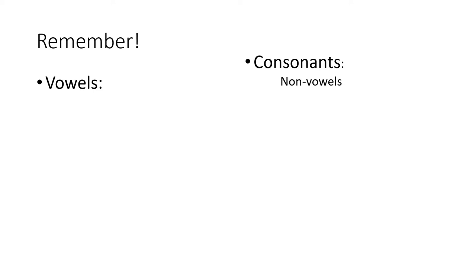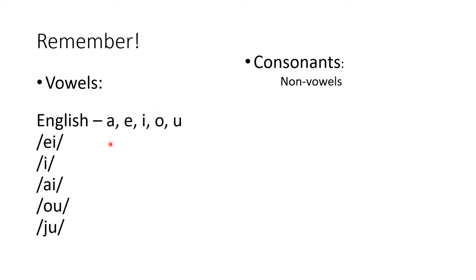I want us to start off with remembering what vowels are and what consonants are. Vowels in English are A-E-I-O-U and the consonants are everything that are not those vowels. Here we have the letters A-E-I-O-U and their pronunciation written out. This is a system that linguists tend to use to represent sounds.